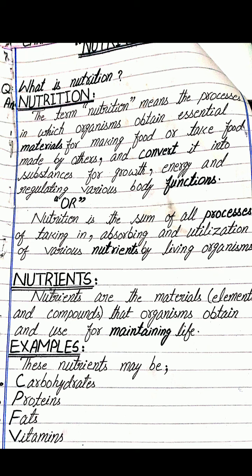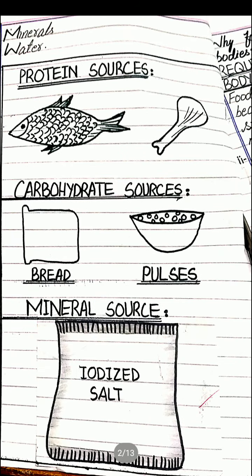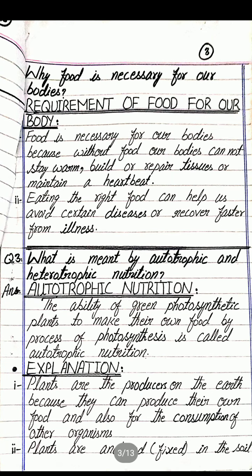Nutrients are the materials — elements and compounds — that organisms obtain and use for maintaining life. To maintain our life, we all need specific kinds of nutrients. For example, carbohydrates, proteins, fats, vitamins, minerals, and water are the essential nutrients required for our body. As you can see in the pictures, protein sources include fish, or simply meat, which we use for protein intake. All these nutrients are essential for proper body growth and body functions.